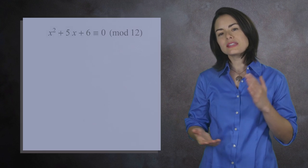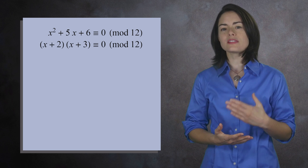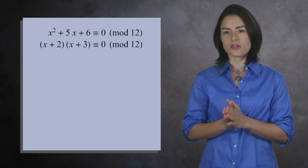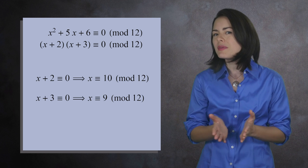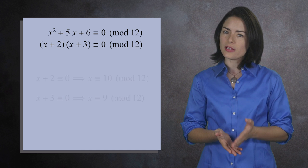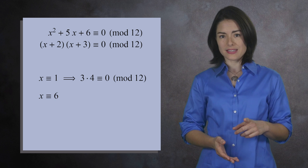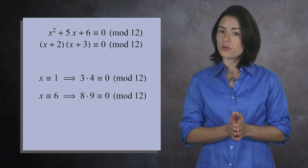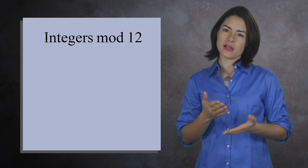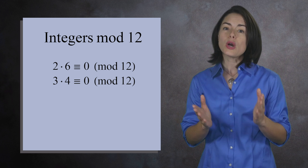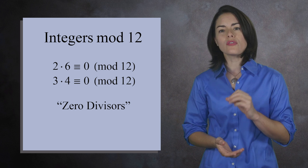So what went wrong? After factoring, we have x plus 2 times x plus 3 is congruent to 0 mod 12. Setting each term to 0 gave us 2 of the solutions, 9 and 10. But look what happens when you plug in 1: you get 3 times 4, which is 0 mod 12. And if you plug in 6, you get 8 times 9, which is also 0 mod 12. Working mod 12, it's possible to multiply two non-zero numbers together and get 0. We say the integers mod 12 have zero divisors, and it's the zero divisors which make solving equations more difficult.